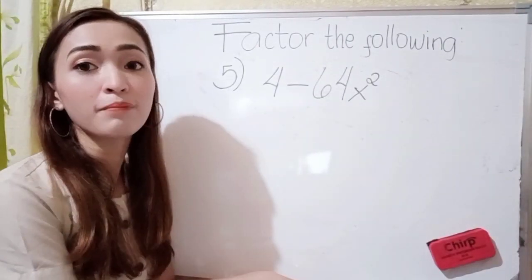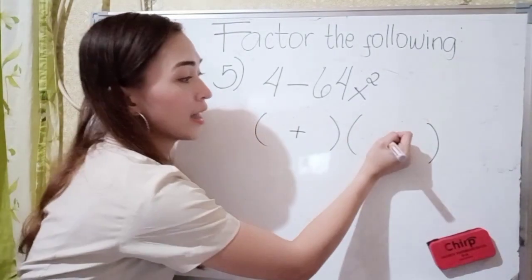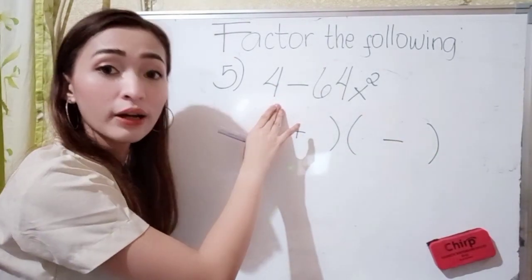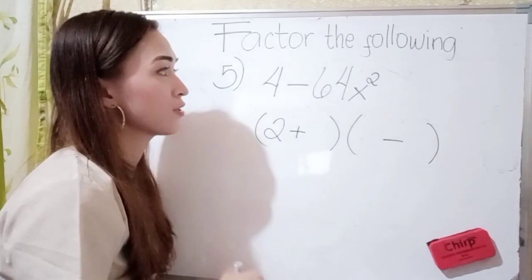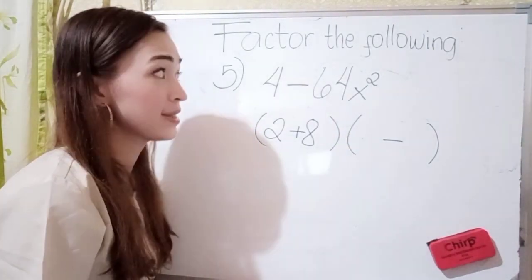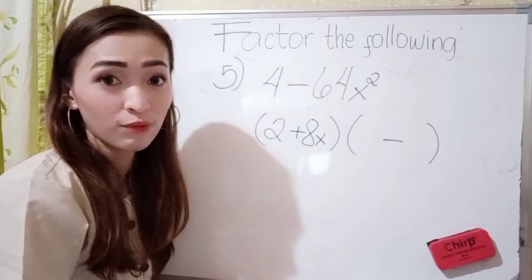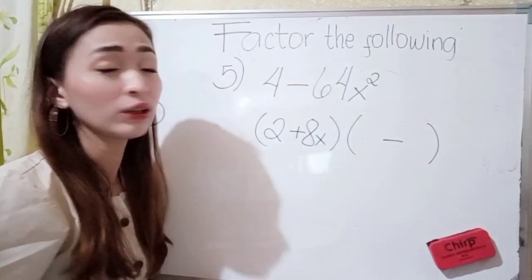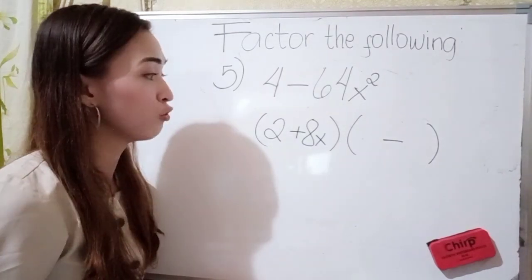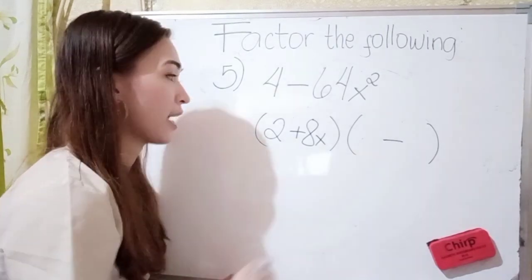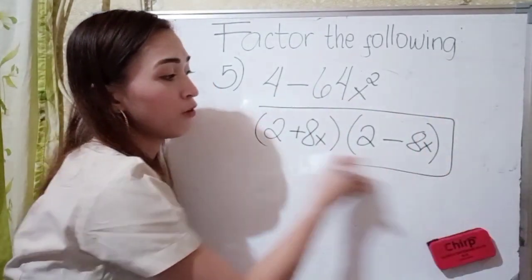For number 5, we have 4 minus 64x squared. Again, write the grouping symbol — left-hand side is plus, right-hand side minus. What is the square root of 4? The square root of 4 is 2, because 2 times 2 is 4. What is the square root of 64? It is 8, because 8 times 8 is 64. We have x here, so write x. For the exponent, 2 divided by 2 is 1, so we don't need to write 1. Our final answer is 2 plus 8x, times 2 minus 8x.